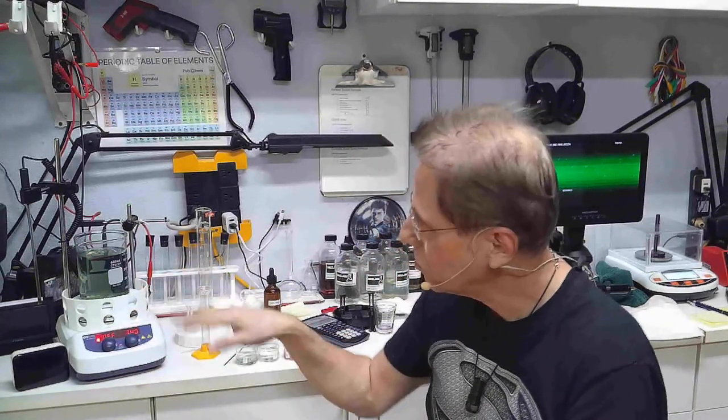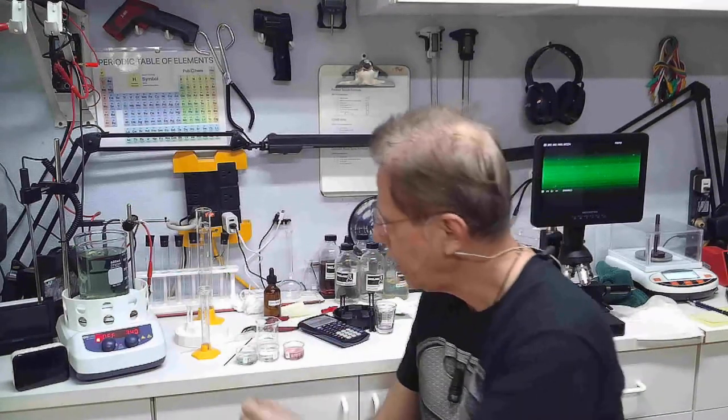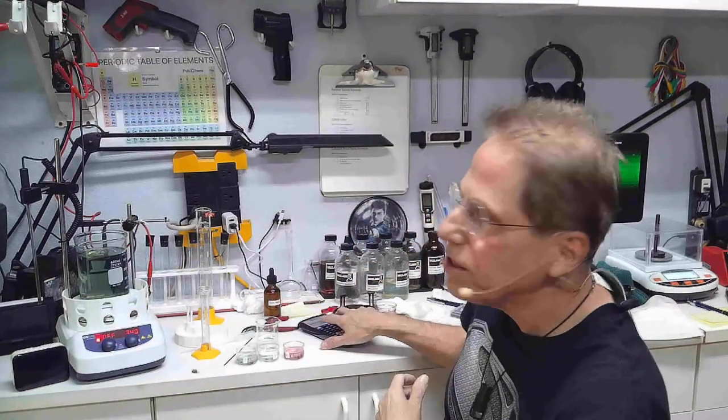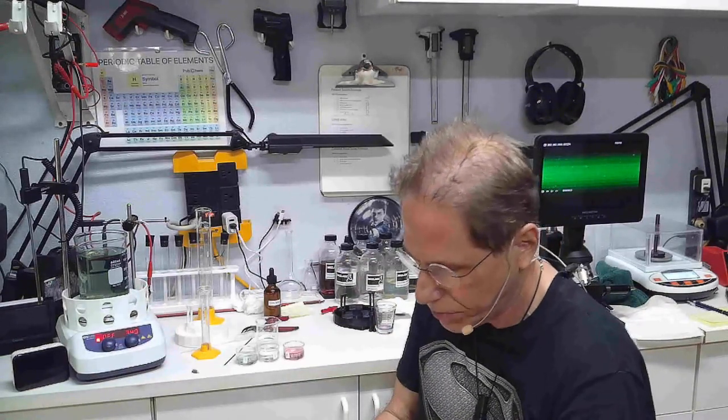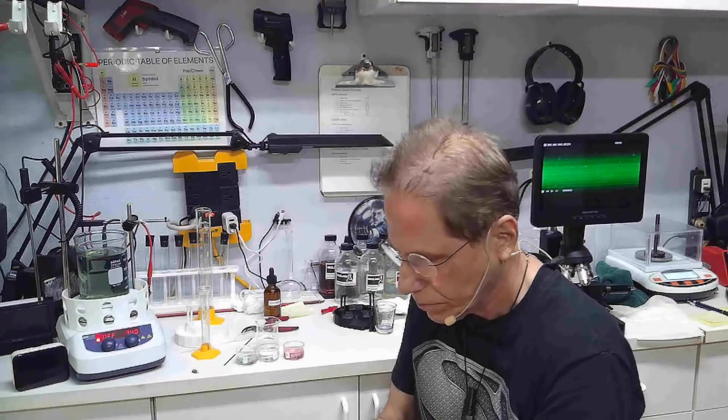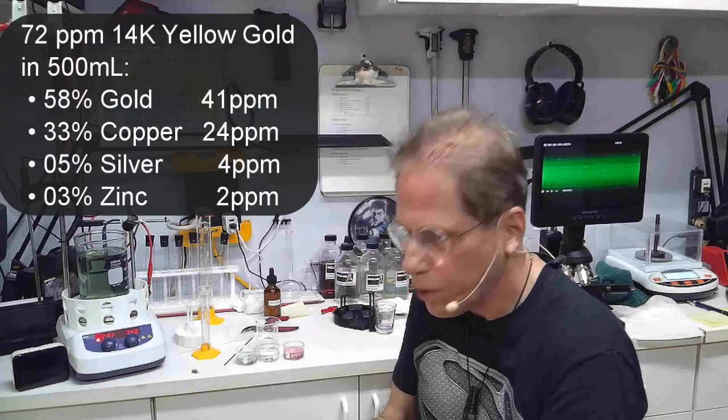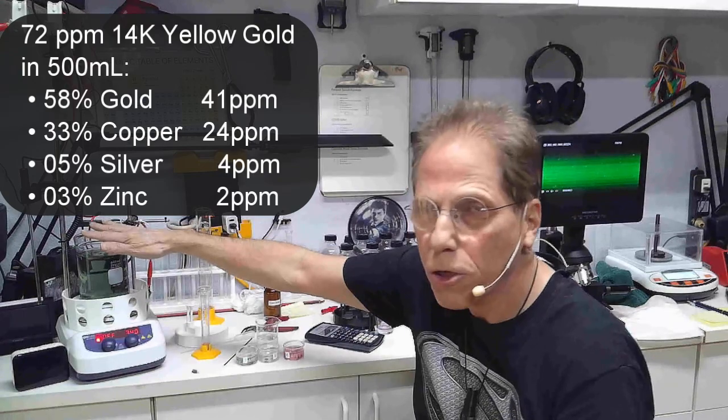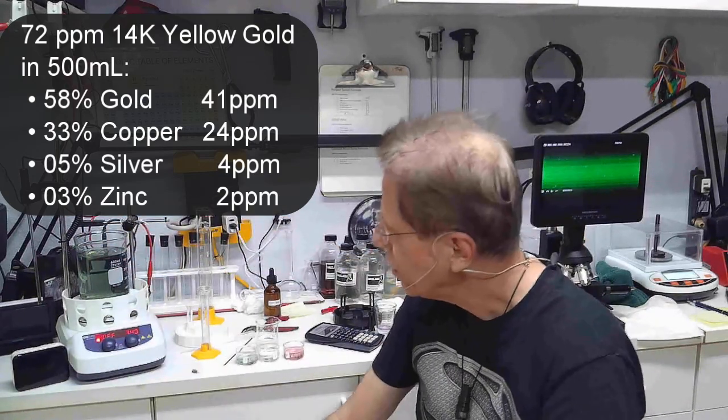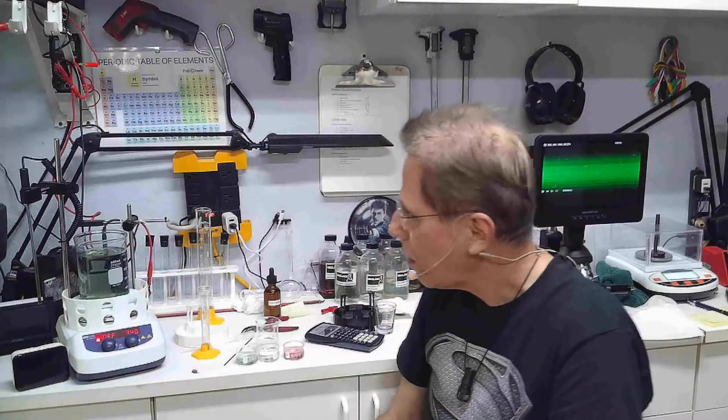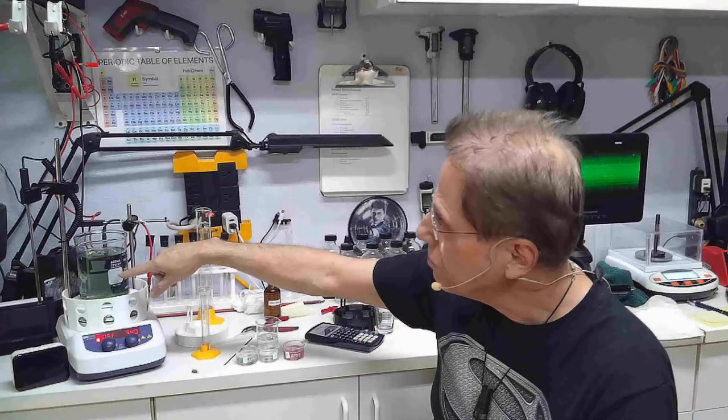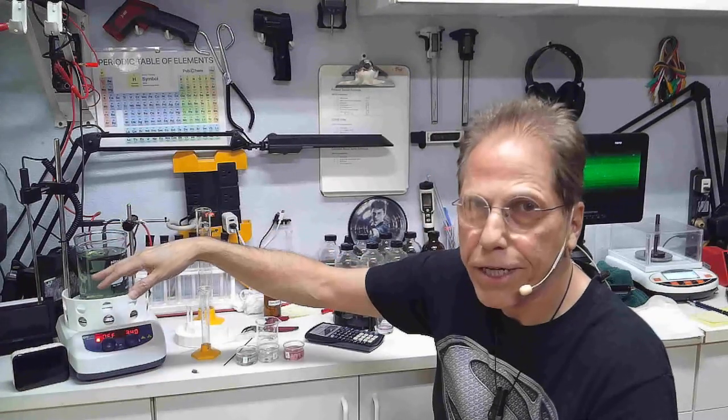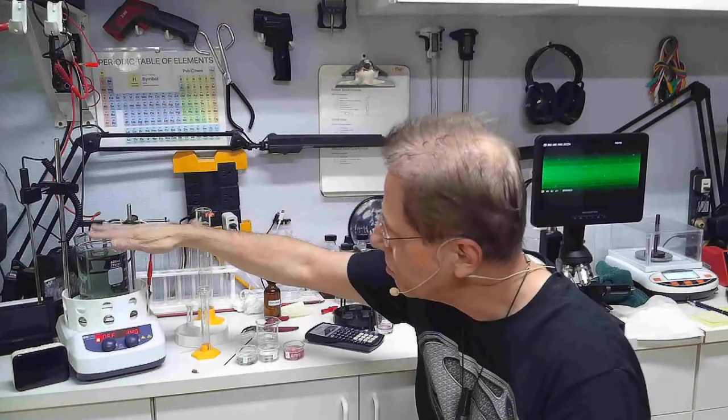So this solution here winds up being a 72 parts per million gold conglomeration solution. Now it's not all gold. 58% of that 72 parts per million winds up being gold, which roughly is 41 parts per million. So this has got 41 parts per million gold in it, and then silver, copper, and zinc is the rest of it. And that accounts for the greenish sort of color, because copper is the higher quantity, so we had the fighting of the ruby red gold with the copper, which gave us this dark green color.